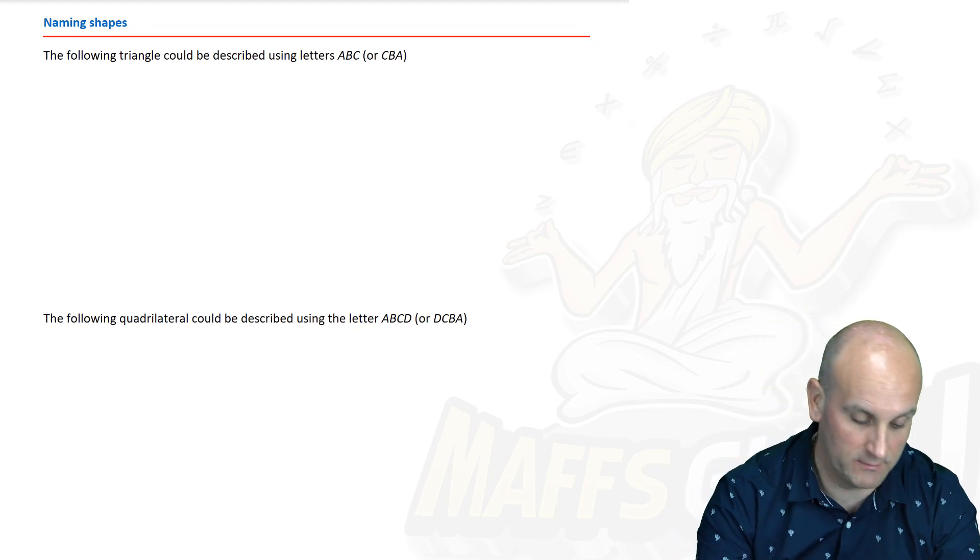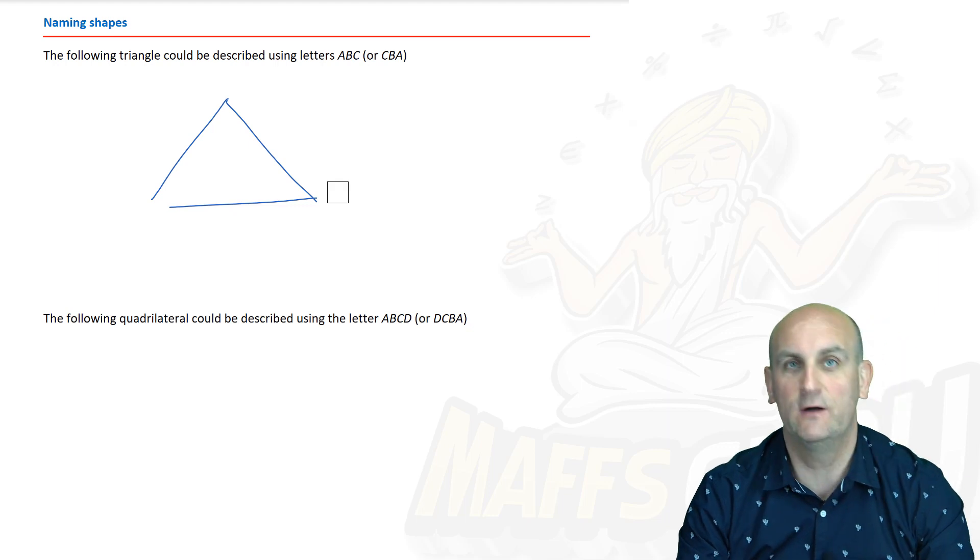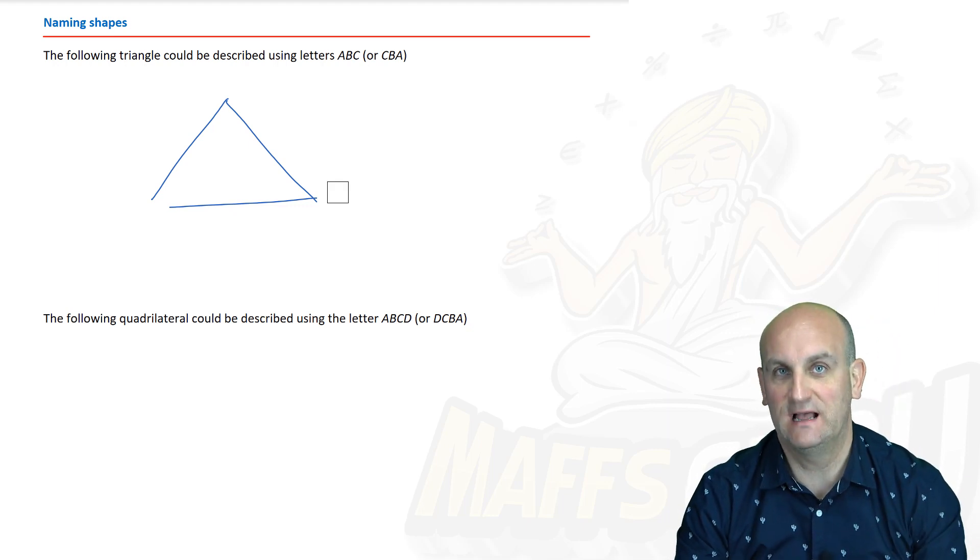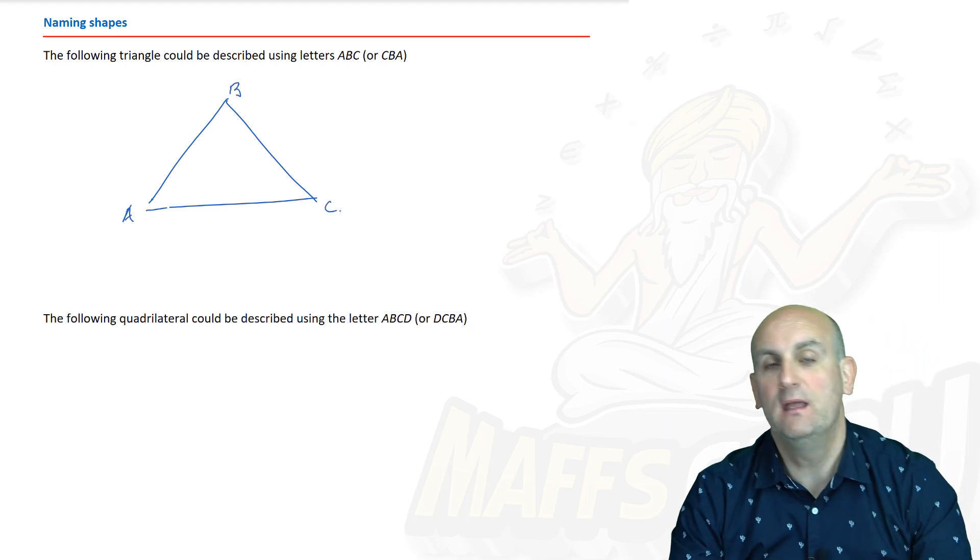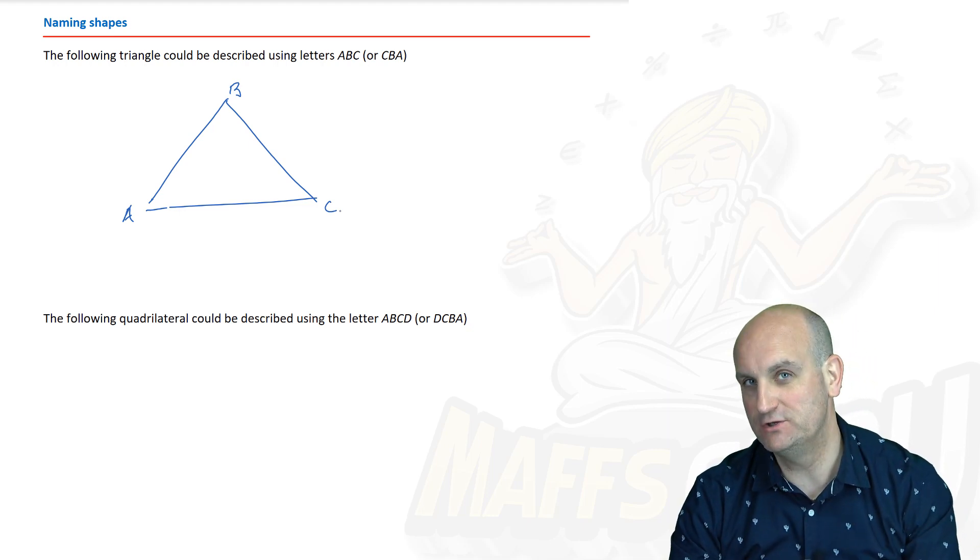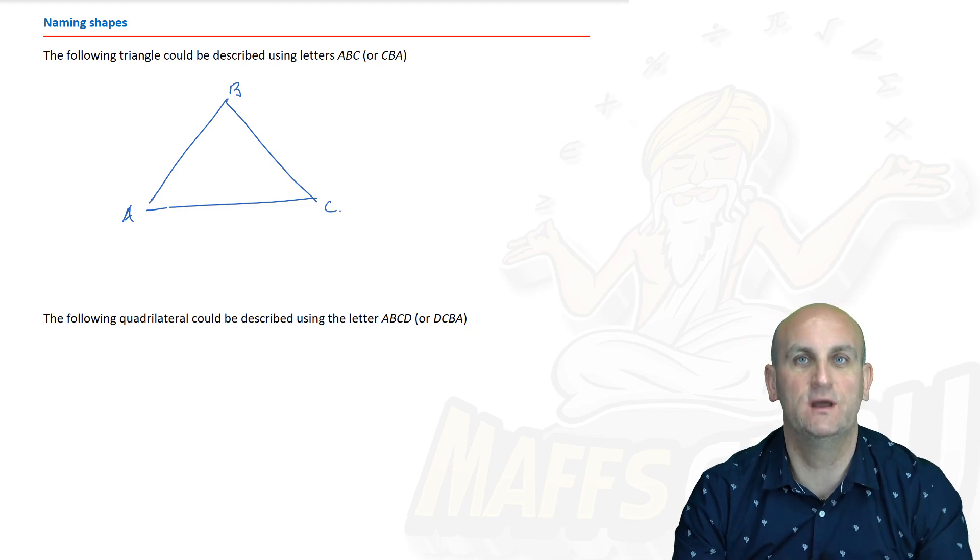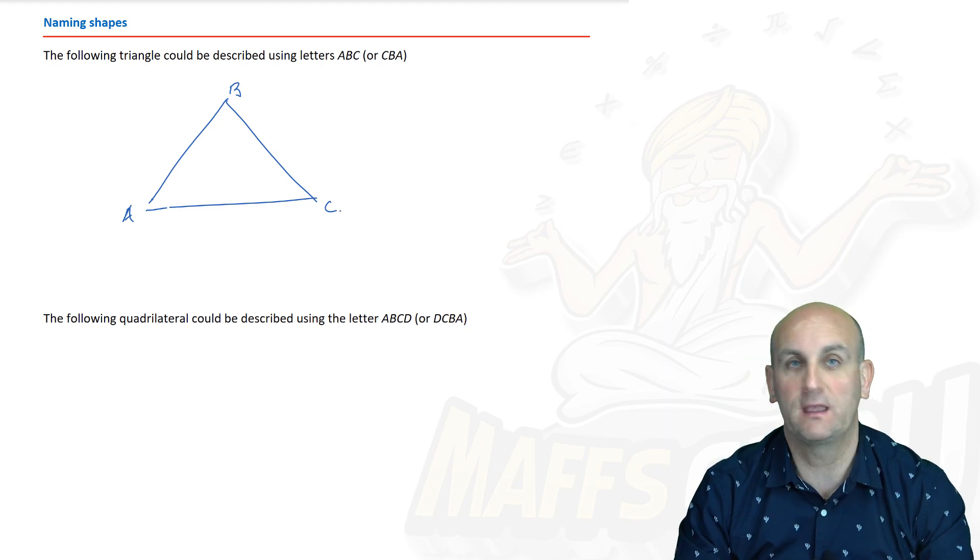So what we tend to do is we use letters to describe or name shapes. Now obviously the most simple shape we can probably draw other than the straight line is in fact a triangle. So there we go, there is a triangle. We tend to name triangles using letters and the letters are placed on the vertices and if you remember what a vertex is, it is nothing more than a corner. So we could put A, B and C there. Now how do we label these things? Well to be honest with you, there is a bit of a convention.